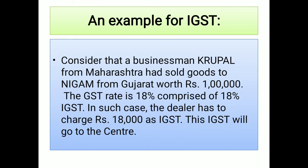Consider that businessman Krupal from Maharashtra sold goods to Nigam from Gujarat worth Rs. 1 lakh. Here the state is changing — goods are being transferred from Maharashtra to Gujarat. At the same 18% tax rate, 18% of Rs. 1 lakh equals Rs. 18,000. This entire tax amount is paid directly to the central government as IGST.